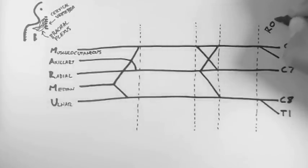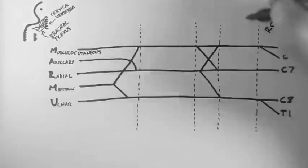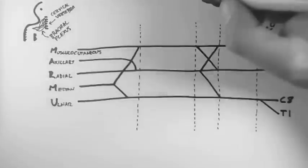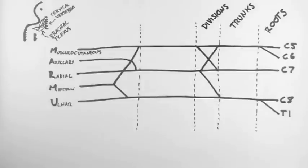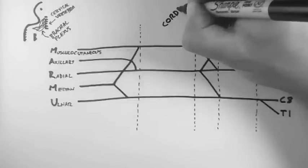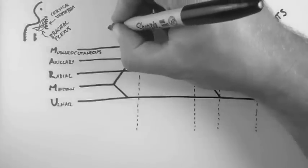So here I've already said these are the nerve roots, then we get the trunks, then the divisions, then the cords and then finally the branches.